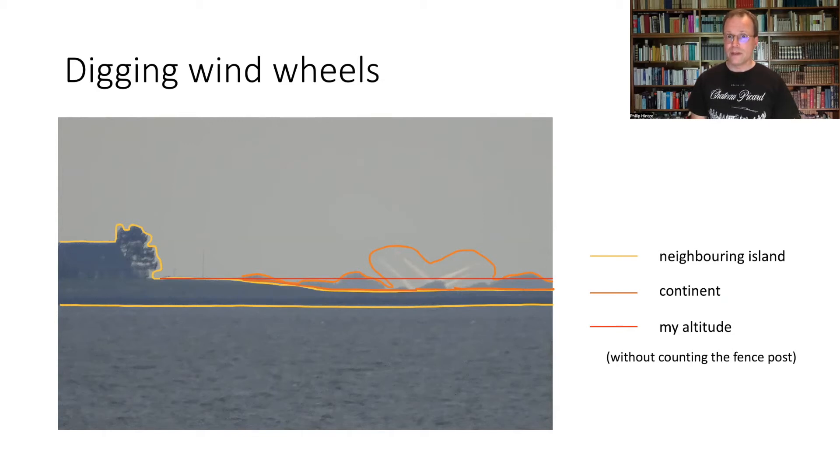You can all see clearly that the hubs of these windwheels are below the straight line between me and the red line. So they are below this level of five meters. That's difficult to explain.